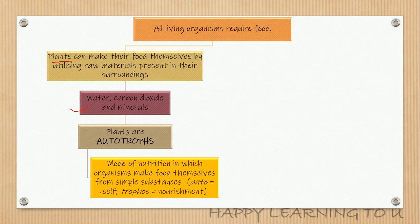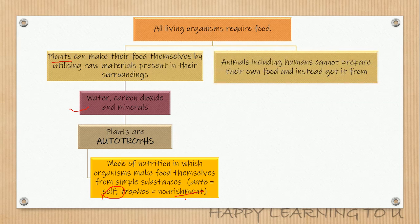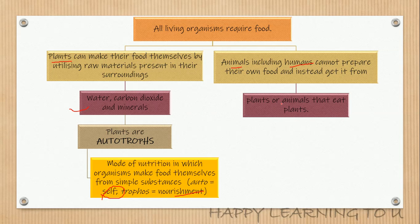Auto meaning 'self' and trophs meaning 'nourishment,' so they are capable of obtaining their own nutrition. Animals, including human beings, cannot prepare their own food but they need it for survival. They obtain it from plants or from animals that eat plants — either directly from plants or indirectly.